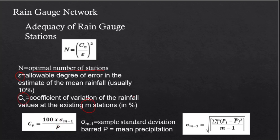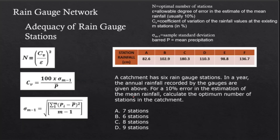To better understand this, we'll solve a problem. We have a catchment with 6 rain gauge stations, and the annual rainfall recorded by the gauges is given. For a 10% error in the estimation of the mean rainfall, we need to calculate the optimum number of stations in the catchment. This 10% error is our epsilon. The choices are: A) 7 stations, B) 6, and so on.